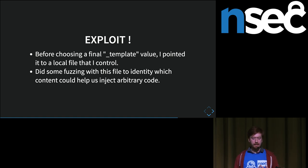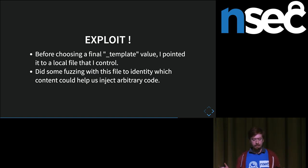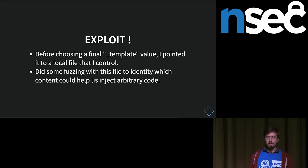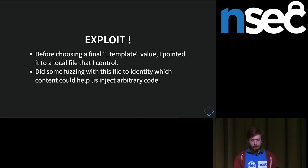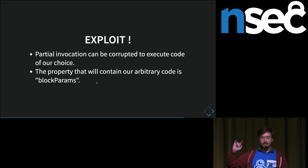We can control which template is rendered, but this is not the end of the exploit, mostly because templates must have the HBS extension, meaning we can't do arbitrary local file reads. So we have to pick an interesting template. I started by pointing to a temporary template and did some fuzzing to figure out what combination of template contents and polluted properties would cause JavaScript code to end up in the final generated JavaScript for the template. What I identified was that partial invocation was the best target to corrupt, and there was a value called blockParams that ended up directly in the generated JavaScript code.